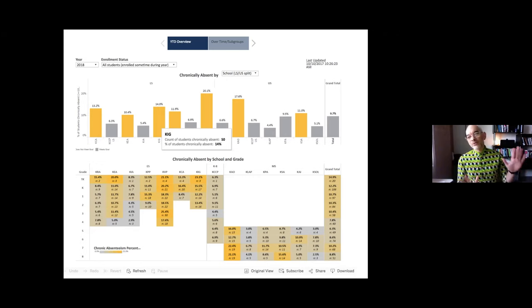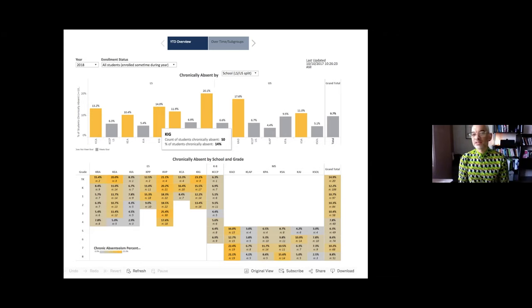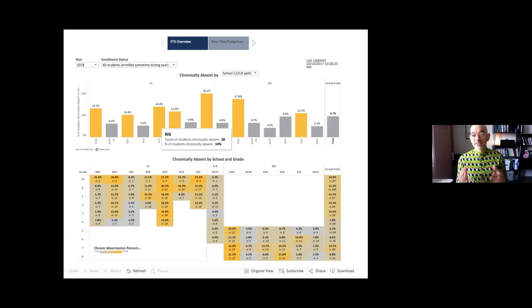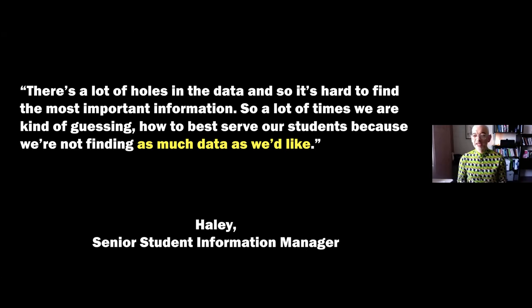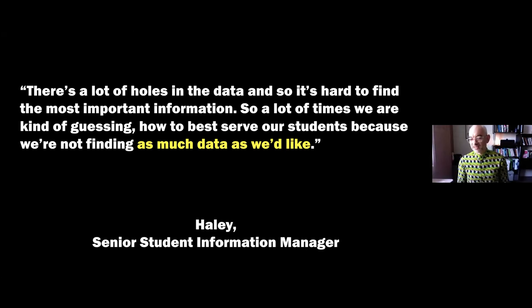So what did we end up with? The messy world of school — we produce via all these devices and platforms a bunch of data, and then we compress it into a dashboard. In response to feeling the dashboard was inadequate, the data team had interesting things to say. The chief of analytics explained: 'Every data set tells a story' — what you need to make sense of life among students and teachers is this narrative quality. But what everyone agreed on was a demand for more data. A senior student information manager, Haley, said: 'There's a lot of holes in the data and so it's hard to find the most important information. A lot of times we're kind of guessing how to best serve our students because we're not finding as much data as we'd like.' This expresses the idea that if we get more data, we'll finally be able to accomplish these things we want to accomplish — a kind of voraciousness of organizations for data.